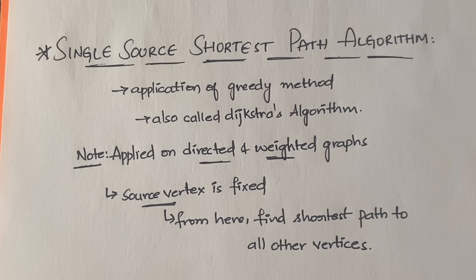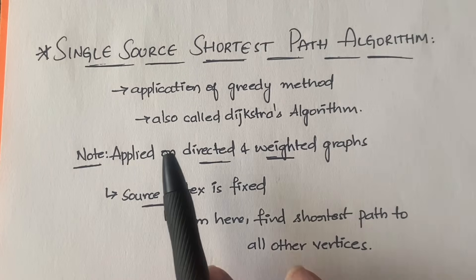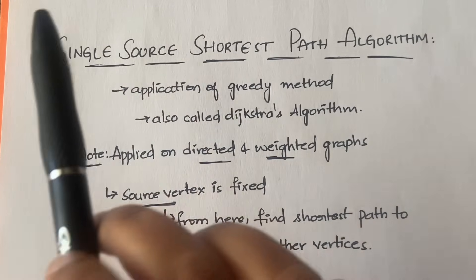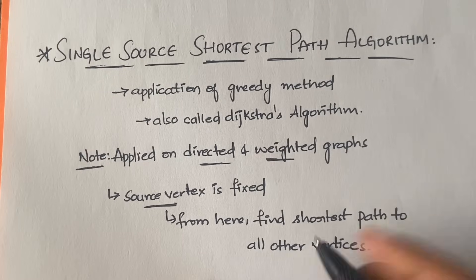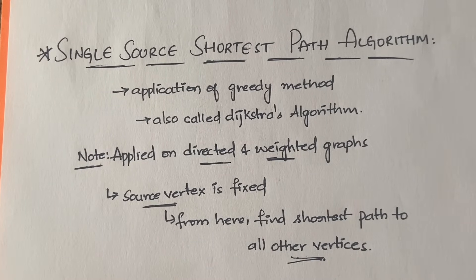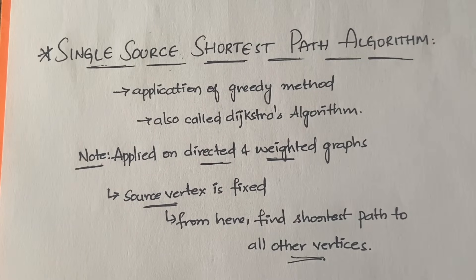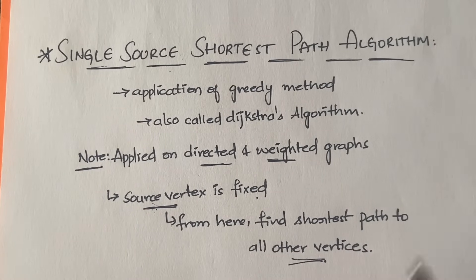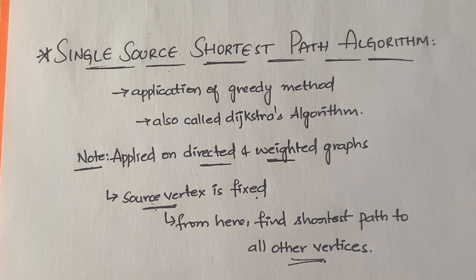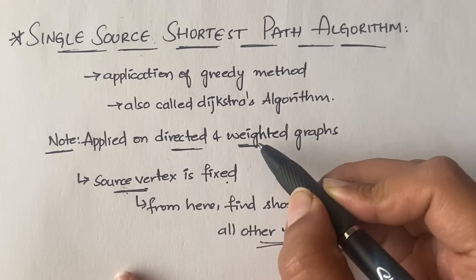The name itself says that you have a single source, and you have to find out the shortest path from that single source to all the other remaining vertices in the graph. Whatever remaining vertices you have in the graph, you have to find out what is the shortest path from the single source. The source vertex will be fixed, and from this source vertex you will find the shortest path to all other vertices existing in the graph. This is one of the simplest algorithms — no complicated calculations, no complicated formulas. It is applied on directed and weighted graphs only.